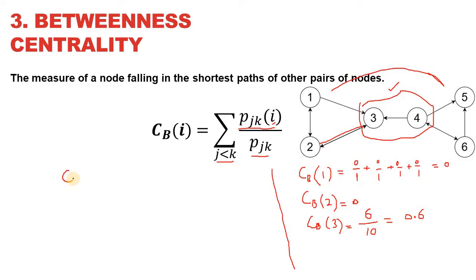However, if the graph is a directed one, then we have to consider the edges with their directions. Even in that case, the betweenness centrality of node 1 is going to be 0, because we do not need to pass through node 1 to get from any node to any other node. For example, from node 2 we can directly go to node 3. From node 4 we can directly go to nodes 3, 5, and 6. From node 5 we cannot go to any other node, while from node 6 we can directly go to node 5 or node 4. So we do not need to pass through node 1, and therefore its betweenness centrality remains 0.